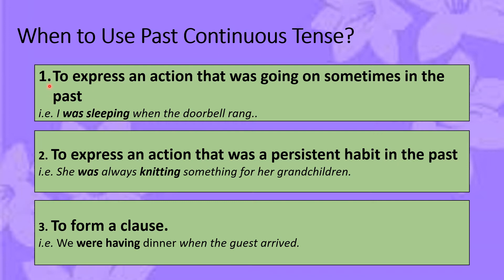The first situation is that if you want to express an action that was going on sometime in the past, you will use past continuous tense. For example, 'I was sleeping when the doorbell rang.' You can see that somebody is talking about an action which was taking place in the past, so the past continuous tense has been used.